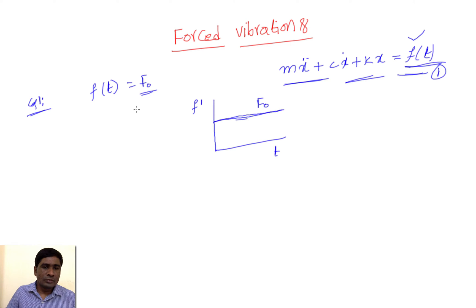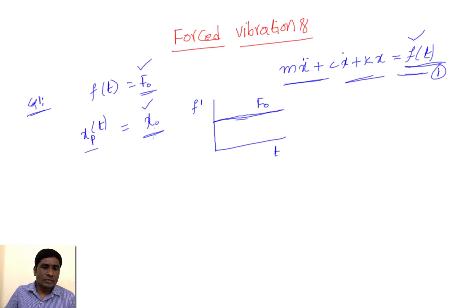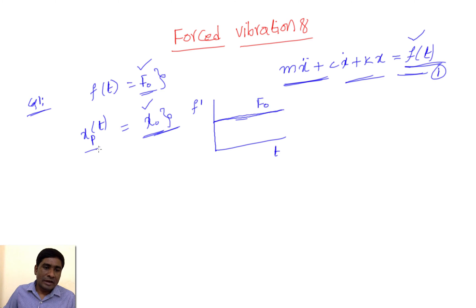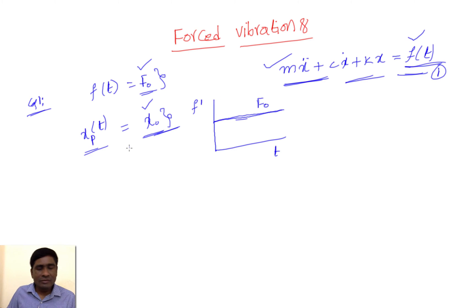In this case, I will assume the particular solution x(t) = x₀, where x₀ is a constant value, because the applied force F₀ is also constant. We need to find x₀. When we derive the equation of motion, both the particular solution and the homogeneous solution must individually satisfy the differential equation, and their combination must also satisfy it.